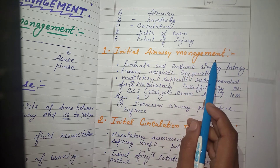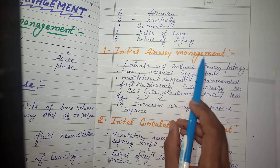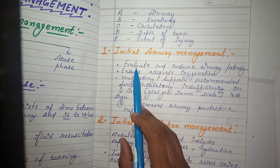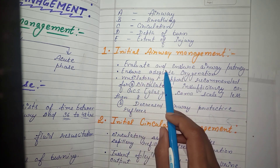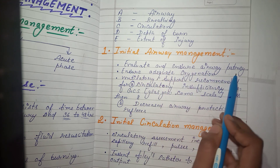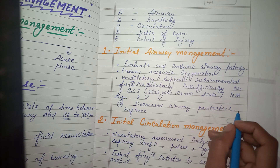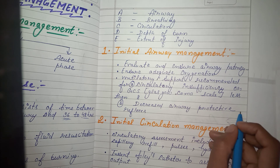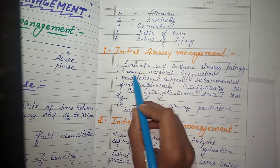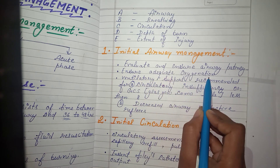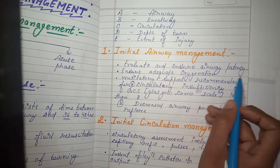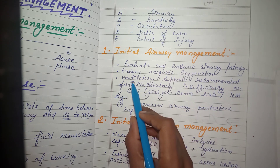Initial airway management involves evaluating and ensuring airway patency — checking whether the airway is clear and ensuring the patient is taking proper breaths. The next step is to ensure adequate oxygenation by providing oxygen, followed by ventilator support as needed.